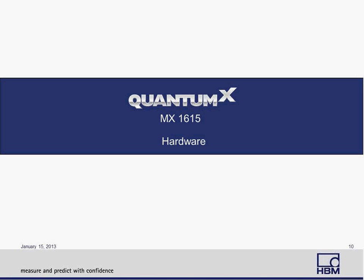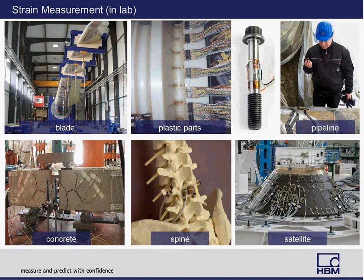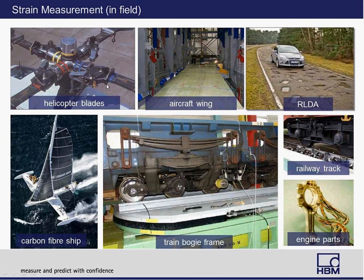The 1615 hardware is currently in use in various applications for strain. For laboratory measurements, they are being used for wind blade application testing, gas pipeline or other pipeline testing, bolts, concrete, and medical applications for spine as well as other technology. For strain measurement applications in the field, they are being used in helicopter or aerospace applications, aircraft wings, road load data acquisition, the marine industry, train bogey, train track measurements, as well as automotive engine parts.